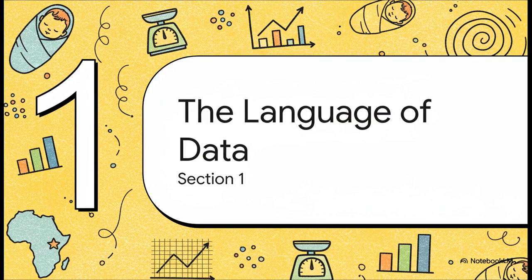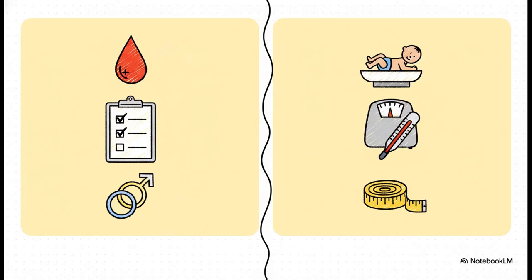Before our midwife can even begin to find the story in these numbers, she has to learn the language. Statistics has its own kind of grammar, and it all starts with figuring out what type of information you're actually looking at. Data comes in two main flavors. On one hand, you have qualitative data — think of these as categories or labels, like a patient's blood group, or whether a delivery was normal or cesarean. On the other hand, you have quantitative data — that's all about numbers you can measure, things like age, temperature, and a baby's weight. Our midwife's list is purely quantitative. Just knowing that is the first key to unlocking it.